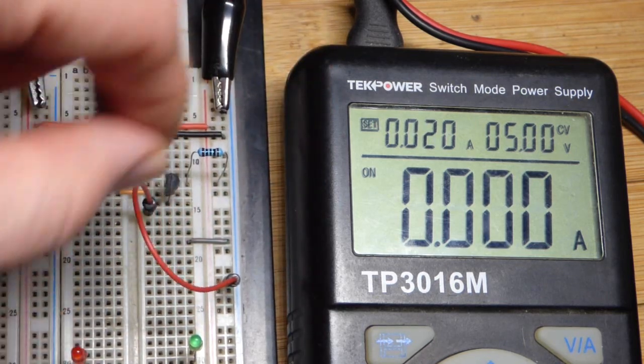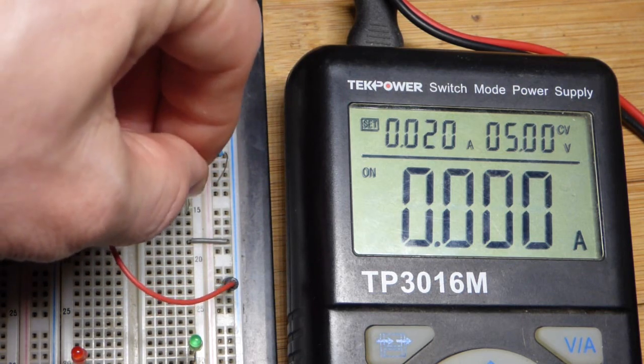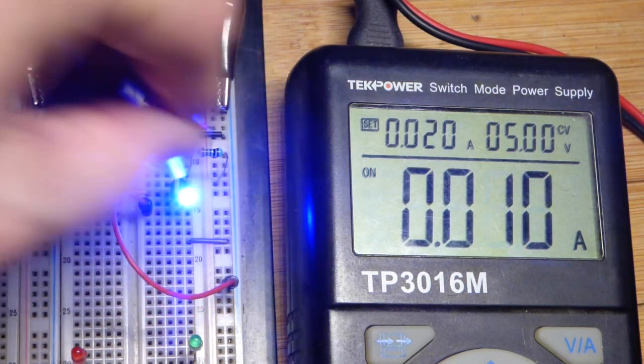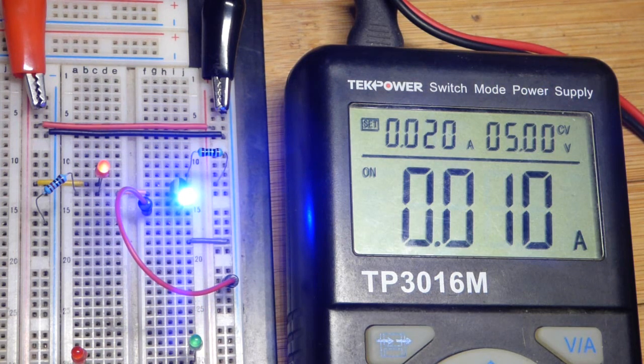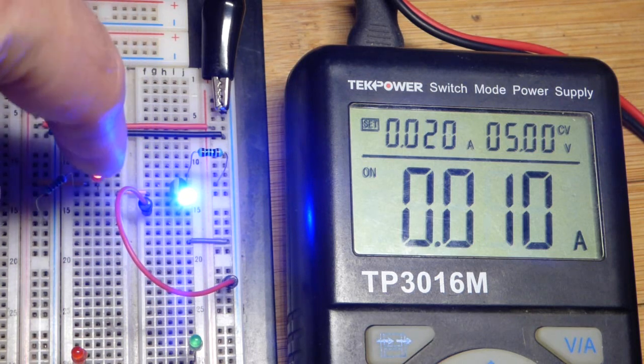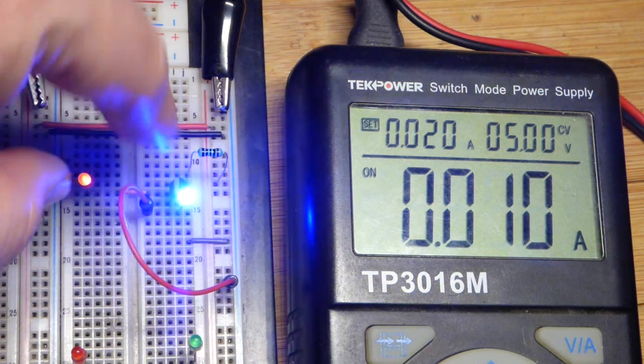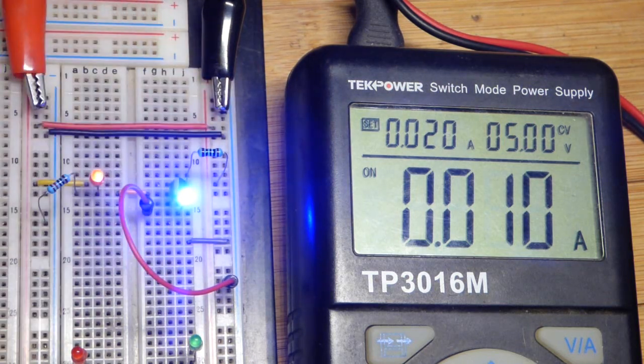So blue LEDs drop more voltage than red LEDs. So the current is expected to go down a little bit more. But being a current source, there we have a set amount of current that's going to flow through the blue LED. We're not really worried about the current here. It's pretty insignificant other than helping to set the current.